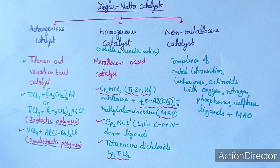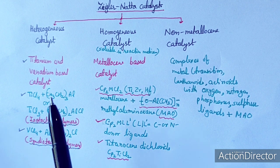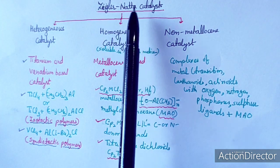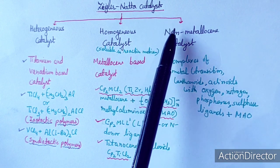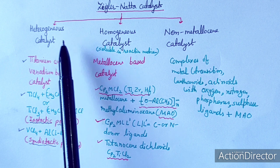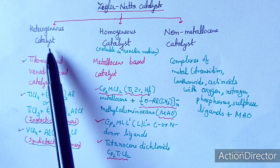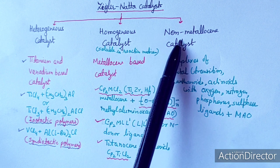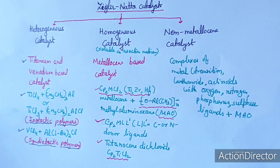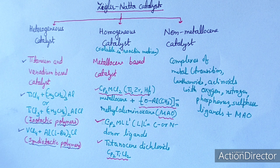For Ziegler-Natta catalysis, the catalyst required is the Ziegler-Natta catalyst. This catalyst can be divided into three types: one is heterogeneous catalyst, the second is homogeneous catalyst, and the third category is non-metallocene catalyst.